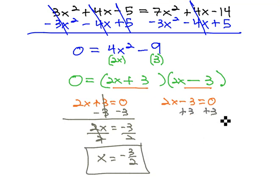Solve the second equation by adding 3 to get 2x equals 3, and dividing by 2 to get x equals 3 halves.